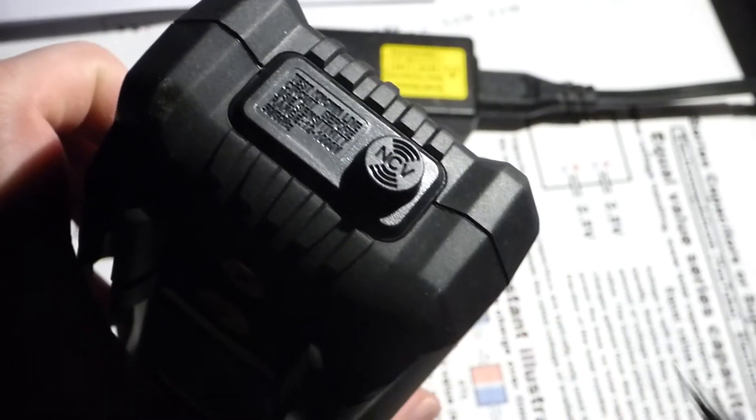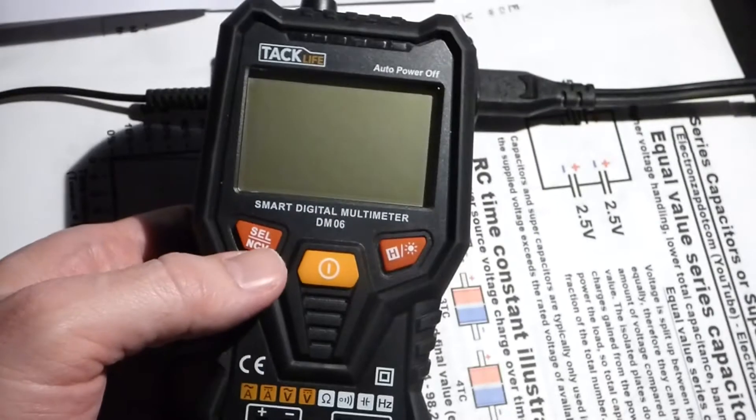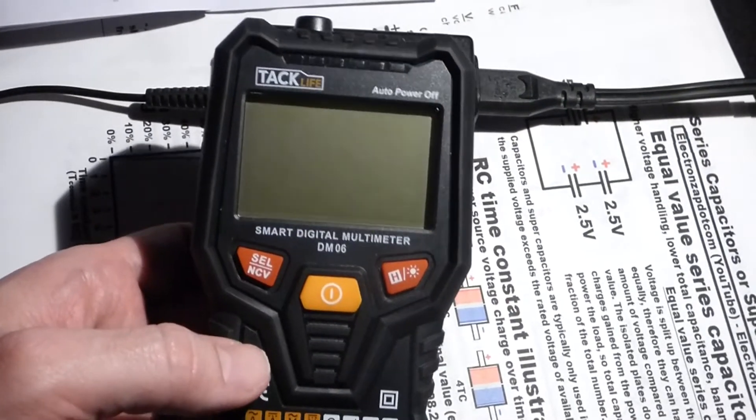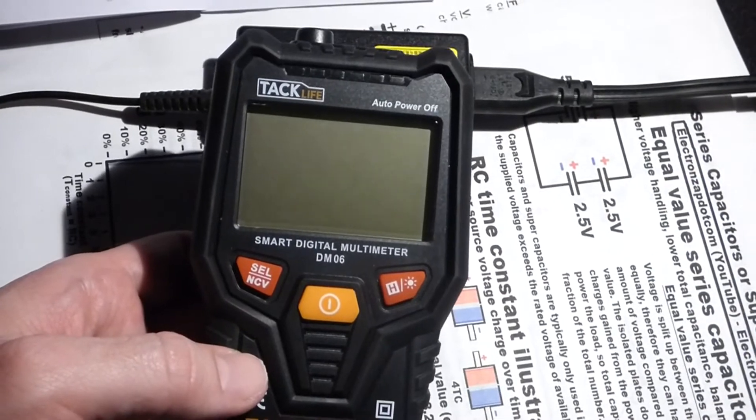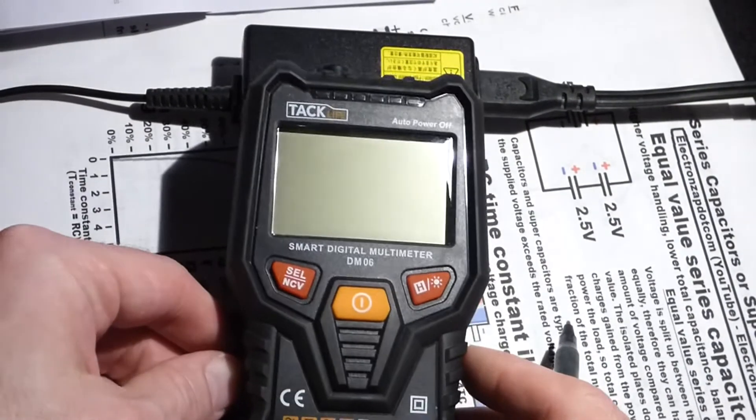You see NCW for non-contact voltage. What that means is we can tell if there's a voltage somewhere using this meter without making an electrical connection. That's what non-contact means.